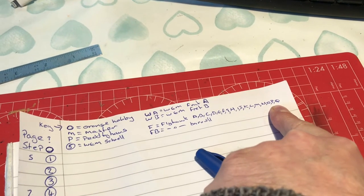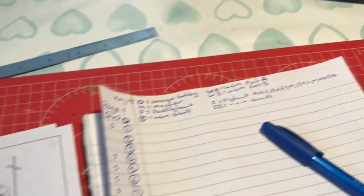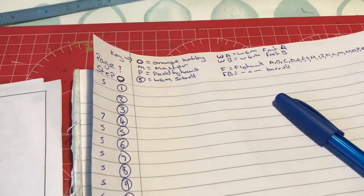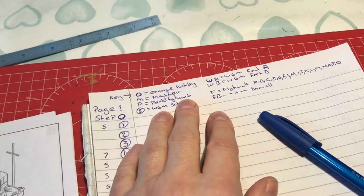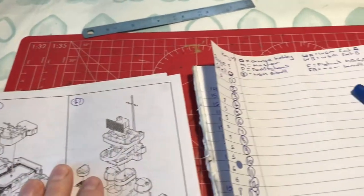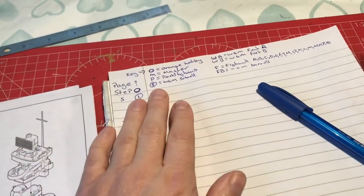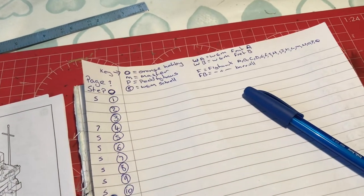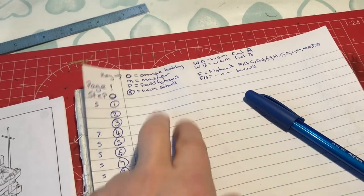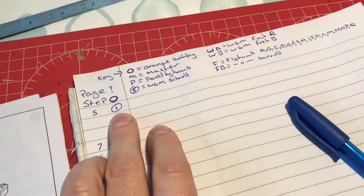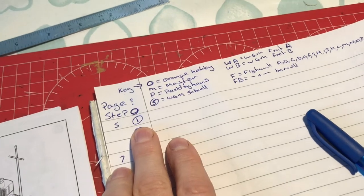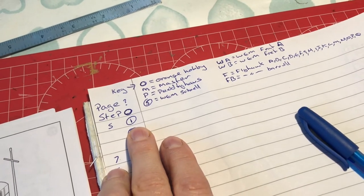Our next step is to go through each one of these sets of instructions and cross-reference it with the kit instructions and write down on each one of those steps what I need. So that when I come to do step one, which I know is building the hull together.